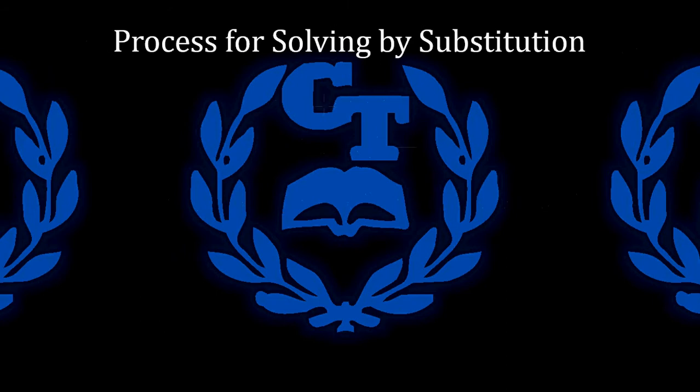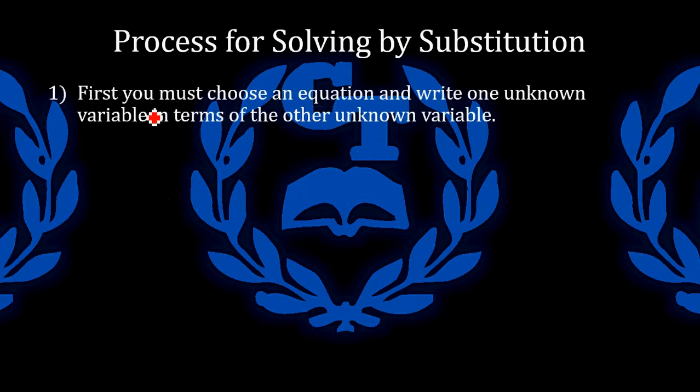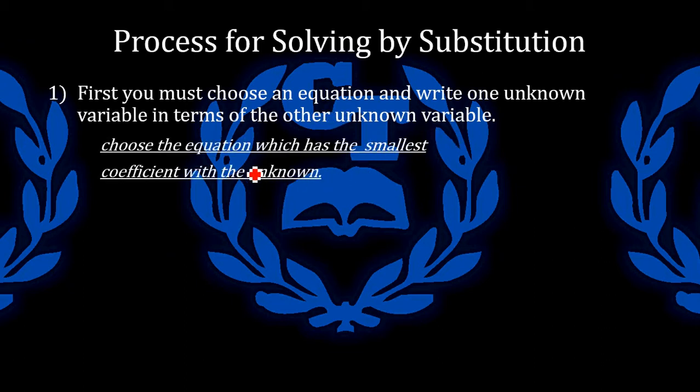So first off, you are going to get the process for it. The first step in the process is that you must choose an equation and write one unknown variable in terms of the other unknown variable. And the best equation to choose is the equation with the smallest coefficient with the unknown.